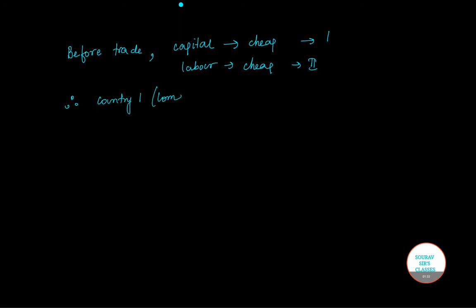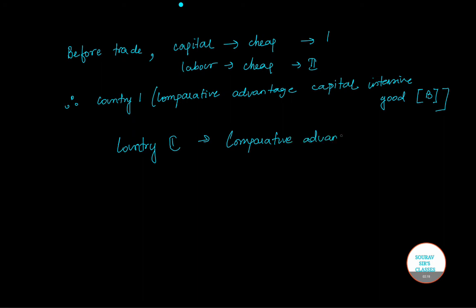Country 1 has a comparative advantage in capital intensive good. We have taken into consideration two goods - one good was marked as A and the other is B. B is a capital intensive good, so country 1 has comparative advantage in production of B, while country 2 has a comparative advantage in labor intensive good, which we have been marking as A.